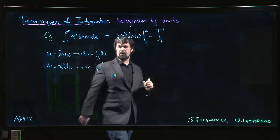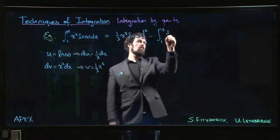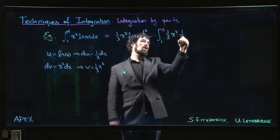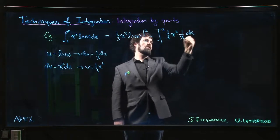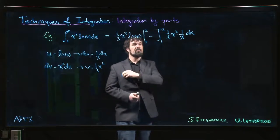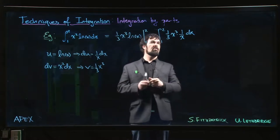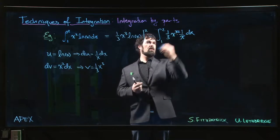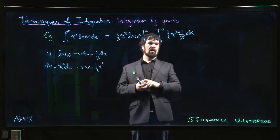So here's v, here's du. We have one third x cubed times 1 over x times dx. And of course we get some simplification here because that x is going to cancel with one of those three, leaving us with x squared.